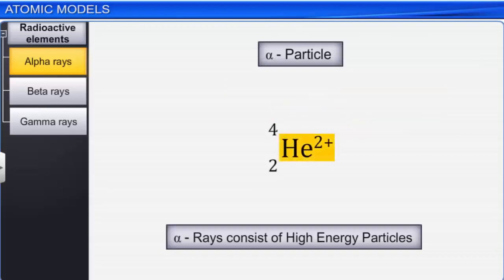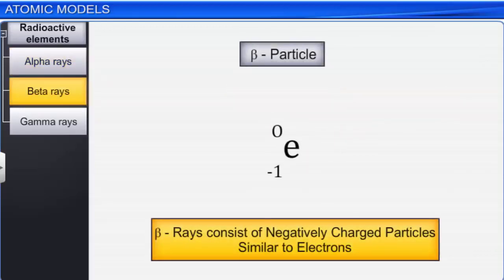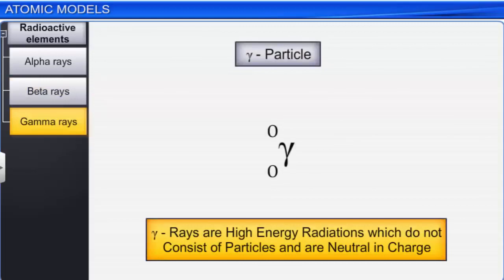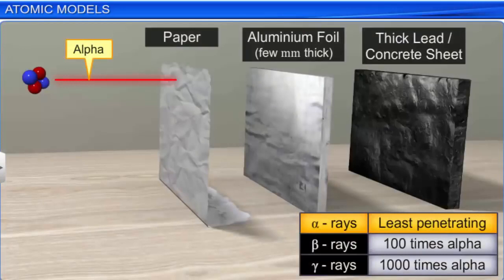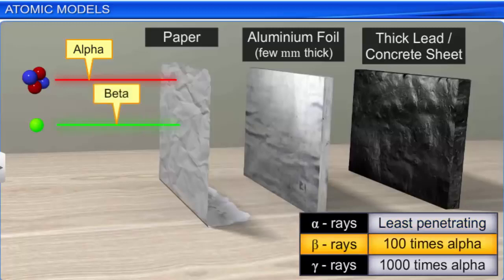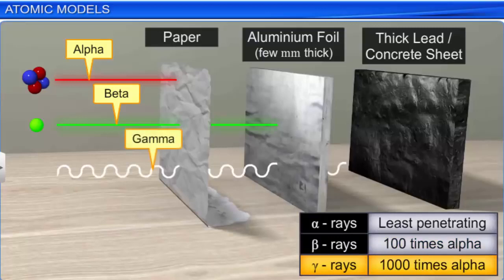The beta rays are negatively charged particles similar to electrons, and the gamma rays are high energy radiations like X-rays. Unlike alpha and beta rays, gamma rays do not contain particles and are neutral in nature. The alpha particles have the least penetrating power among the three. The penetrating power of beta particles is nearly 100 times and that of gamma rays is 1000 times more than that of alpha particles.